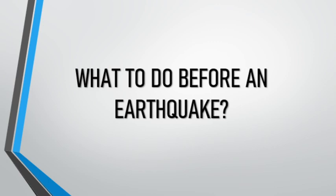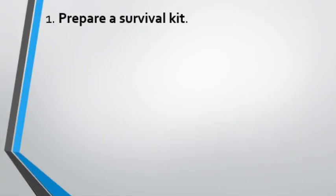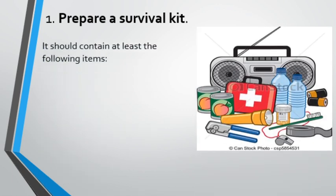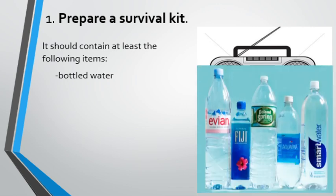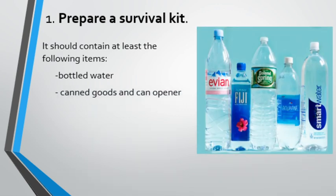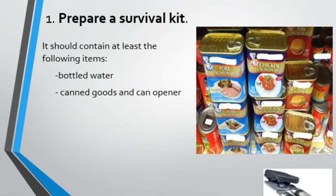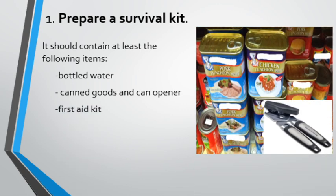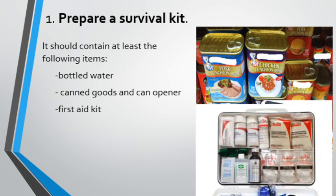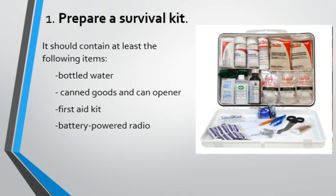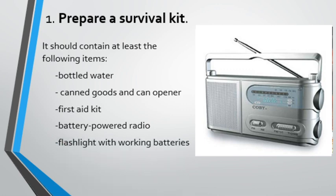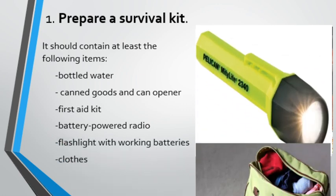Things to do before an earthquake: we must prepare a survival kit. The survival kit must contain the following items: bottled water to stay hydrated in case you get trapped inside a building; canned goods for food supply; a first aid kit in case you or a companion gets injured; a battery-powered radio to stay updated on the status of the earthquake and receive guidelines and instructions; a flashlight with working batteries; and extra clothes for emergency purposes.